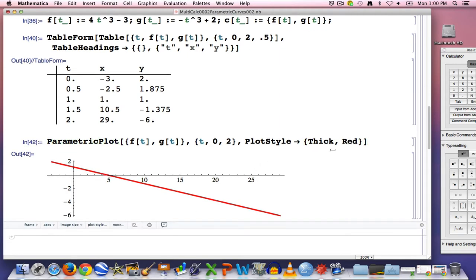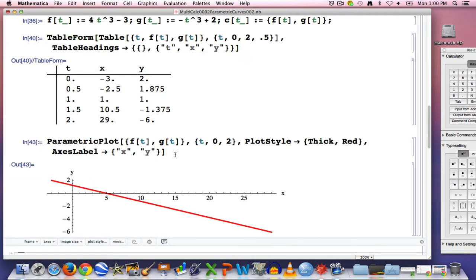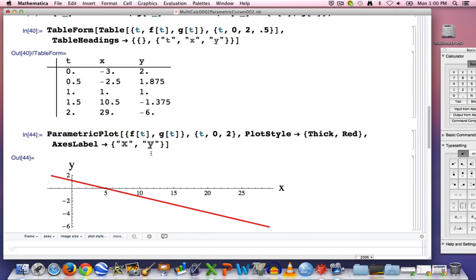I'm going to also label the axes with axes label, another formatting command. I'm going to put x and y in quotes, just like I put them in quotes up here to label these columns. That will label the axes with x and y. It's kind of small. I can make them bigger by highlighting each letter, doing a command plus. It makes them bigger in the input and also in the output. So now you can see them better.